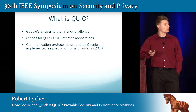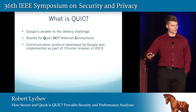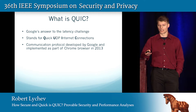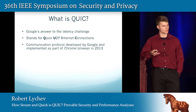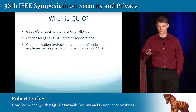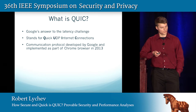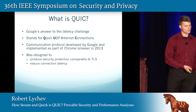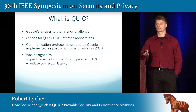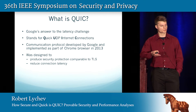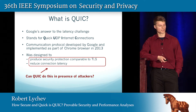This is exactly where QUIC comes in. QUIC is basically Google's answer to the latency challenge. It stands for Quick UDP Internet Connections, so it runs on top of UDP, which is a transmission layer protocol. It was intended for web content delivery, and it was developed and deployed by Google in the Chrome browser in 2013. It is mainly intended to produce security protection comparable to that of TLS, but at the same time reduce connection latency. And that is exactly the question that we try to target in this study.